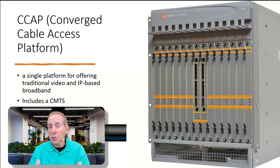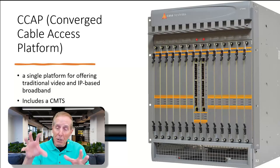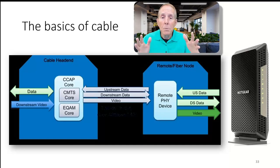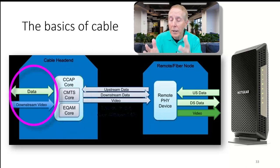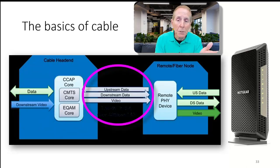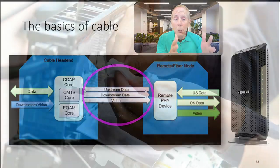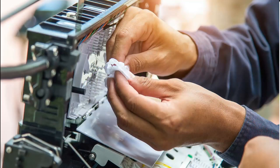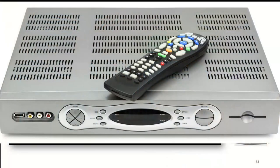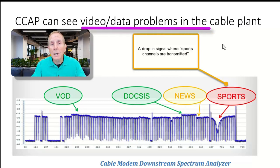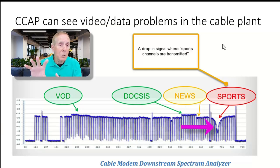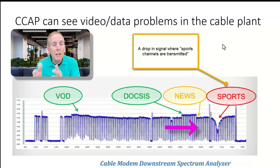Here's a diagram of this new remote PHY system, where we have a CCAP which is representative of both video input and what the CMTS normally does with data - data upstream and downstream plus video, and down to a remote fiber node. That brings to the cable modem data upstream and downstream, and then video to the set-top boxes. The importance of a CCAP versus a CMTS is that they can, from one central piece of equipment, see both video and data problems in the entire cable transmission system. So here I can see where we're transmitting sport video, there is a loss of signal in my cable plant, where DOCSIS, the news feed, video on demand are all fine.